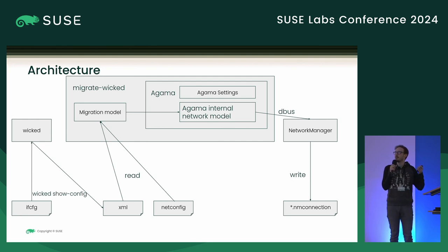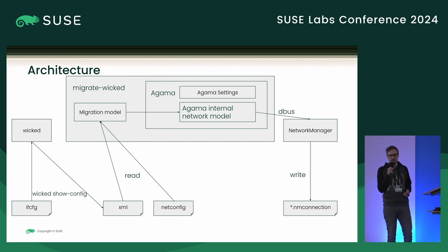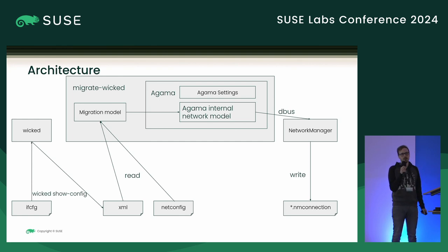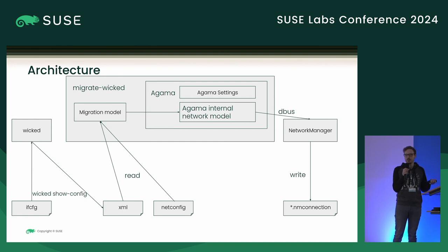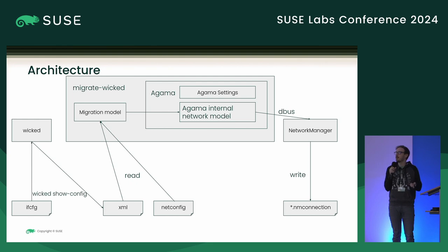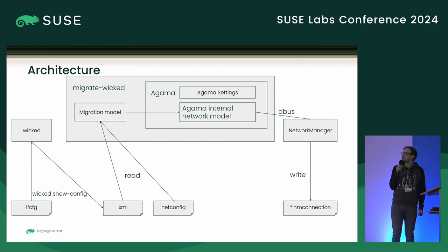From our migration model we can convert to Agama, and in this conversion step we can also do validation and warn users, or error and abort the migration if something is not supported. Normally the way you would interface with Agama from the outside would be via the Agama settings, but that would require Agama to be installed with all its dependencies and the Agama service running — which would complicate things a lot. Because we can interface with Agama as a library, we can skip that and go directly to the internal network model.